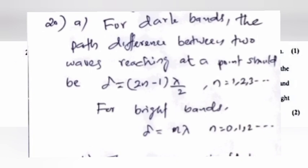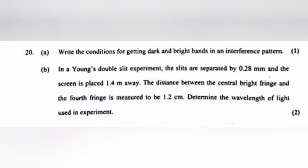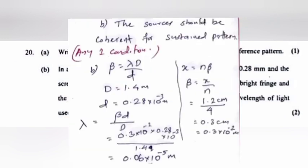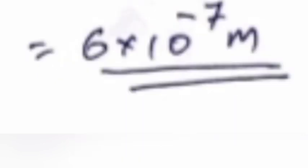Question 20b: In a Young's double slit experiment, the slits are separated by 0.28 mm and the screen is placed 1.4 m away. The distance between the central bright fringe and the fourth fringe is measured to be 1.2 cm. Determine the wavelength of light used in the experiment.